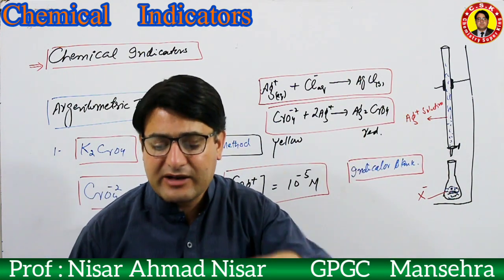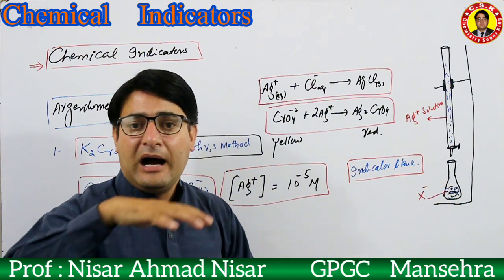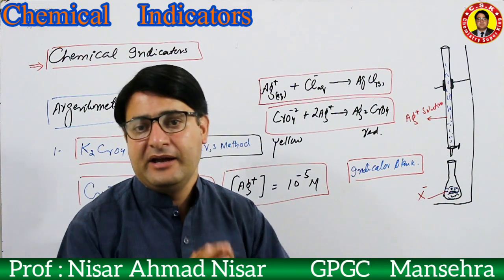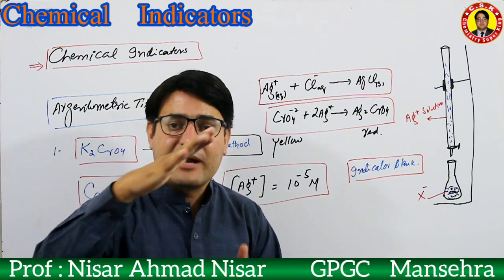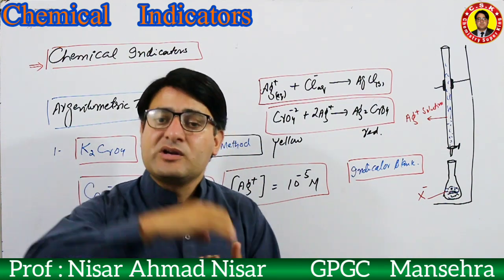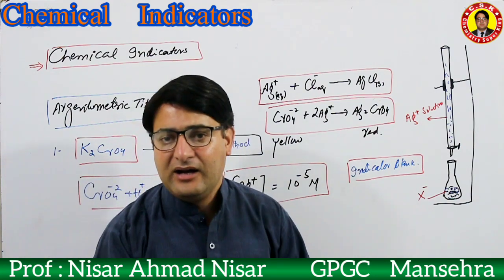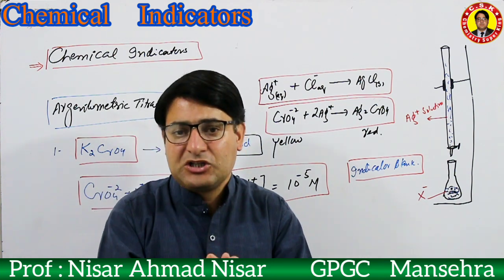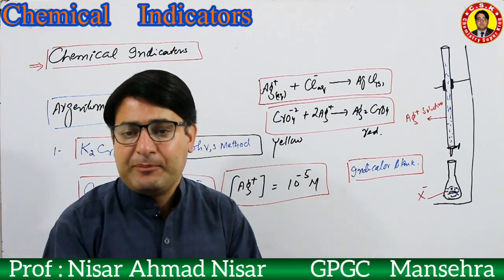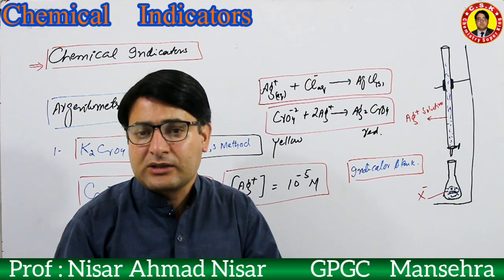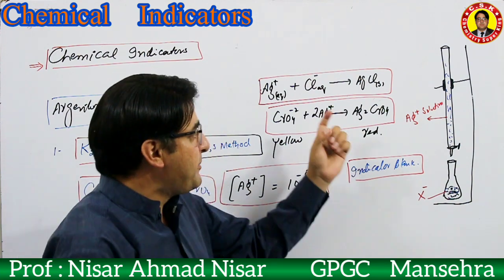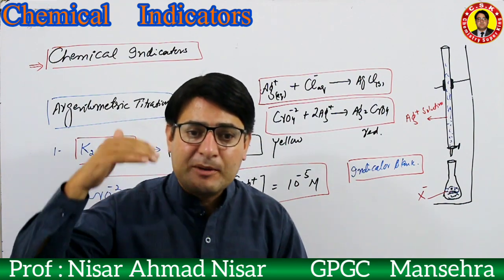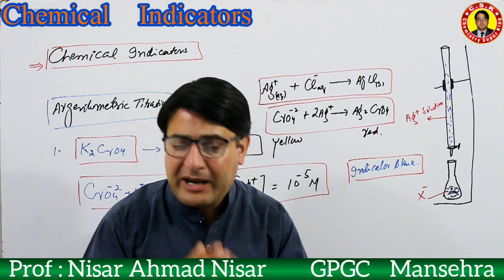At the equivalence point, when all chloride ions have been consumed and all have reacted with silver ions, any extra silver ions added will find no chloride ions in the conical flask — only chromate ions remain. So silver ions react with chromate ions to form silver chromate precipitate. While silver chloride precipitate was white, silver chromate precipitate is red.